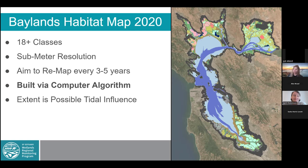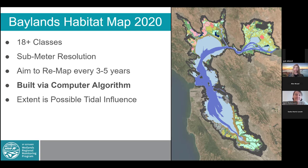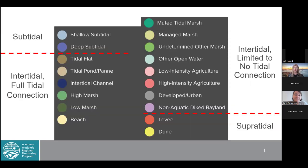Our goal is to remap every three to five years, and to do that we did build a computer algorithm that enables this to occur and enables us to improve that algorithm over time as well. An important caveat is to note that the extent — you can see the gray outline — is really what we find as the possible tidal influence. We have Baylands and intertidal habitats, but we have a limit at the highest astronomical tide.